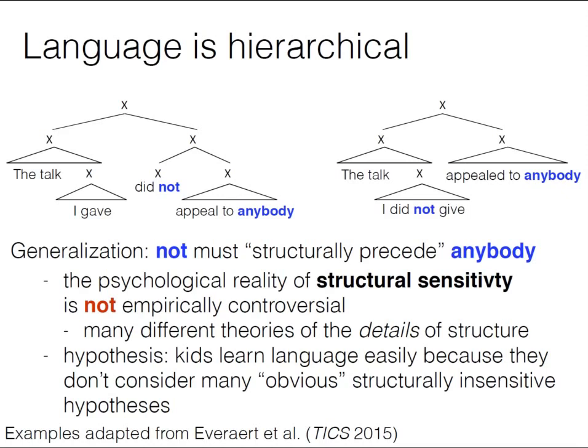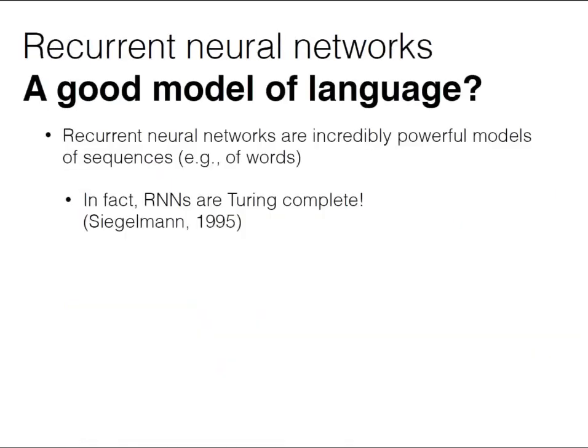We're going to talk about some of the ways we might change our hypothesis class in the neural networks we're building to get better linguistic generalization. Let's go back to recurrent neural network models, which have been our workhorses this whole semester — we use LSTMs and variants for almost everything we've talked about. We can ask: are these adequate models to capture these structural kinds of generalizations?